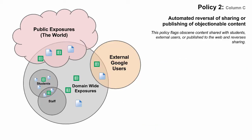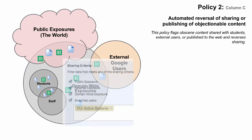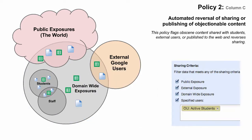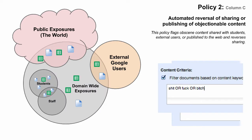The second policy applies similar sharing criteria with a few additions. This policy filters for documents on your domain that are public on the web, shared with external users, accessible to anyone on the domain, or shared specifically with users in the student organizational unit. It then applies a content filter that will flag only those documents containing obscene content. It will automatically remove sharing on those documents and notify the document owners of the actions that were taken.